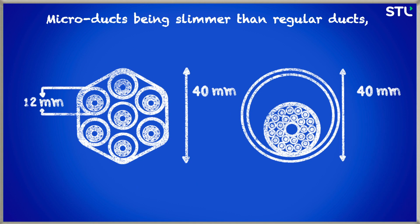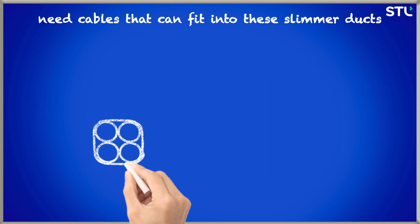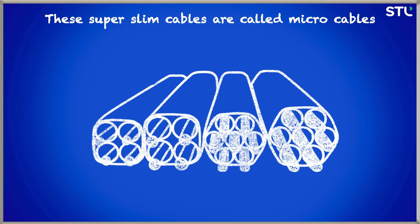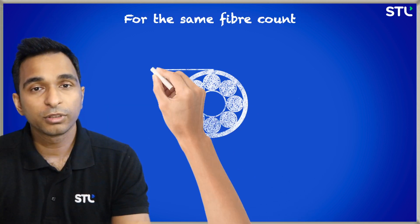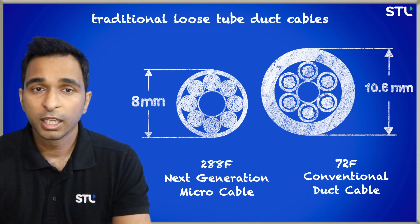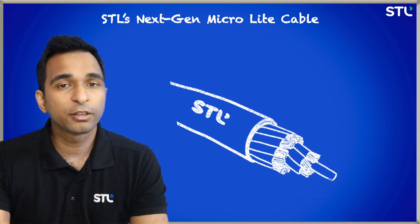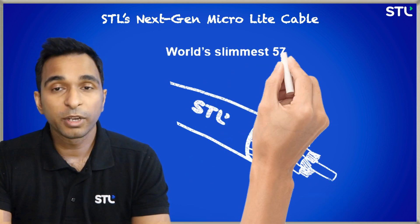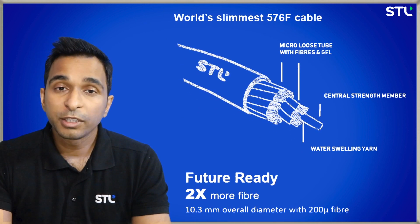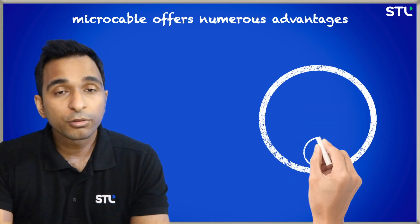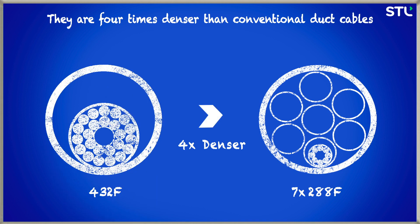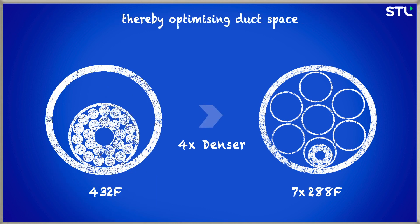This aligning of fiber deployment with customer demand optimizes capital expenditure and expedites network expansion without interrupting existing services. Micro ducts, being slimmer than regular ducts, need cables that can fit into these slimmer ducts. These super slim cables are called micro cables. For the same fiber count, they are comparatively slimmer than traditional loose tube duct cables. For example, STL's next-gen micro light cable is the world's slimmest micro cable, with 576 fibers and a diameter of just 10.3mm. Micro cables offer numerous advantages — they are 4 times denser than conventional duct cables, thereby optimizing duct space.